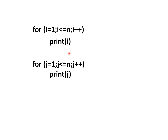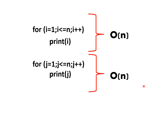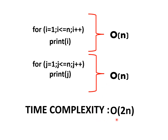Now we have two for loops. The time complexity of each part is O(n), so together the time complexity is O(2n). But since the factor 2 always remains constant regardless of n, we can ignore it, and the time complexity of this program is also O(n).